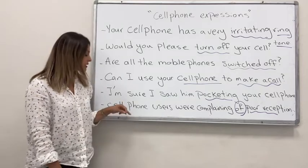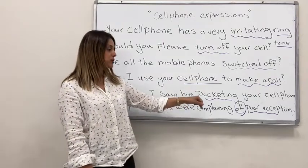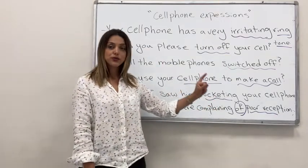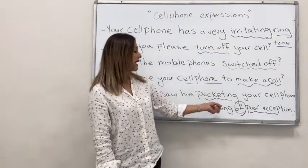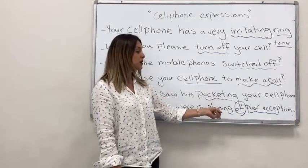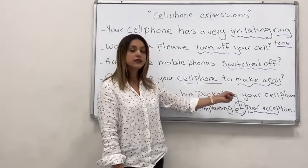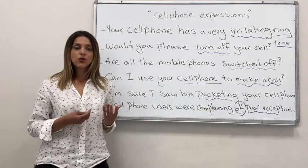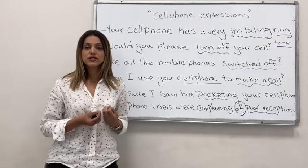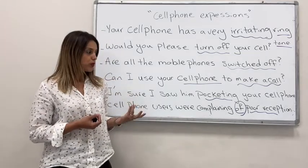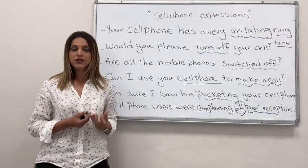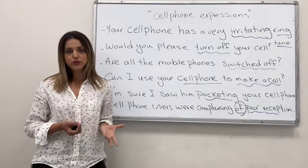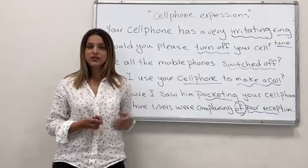Next: 'Cell phone users were complaining of poor reception.' Notice the preposition used after 'complaining' — it's 'complaining of,' not 'complaining about.' 'Complaining of poor reception' means you don't have a good connection — you can't have a clear phone call because the voice is probably broken. So you call it poor reception.